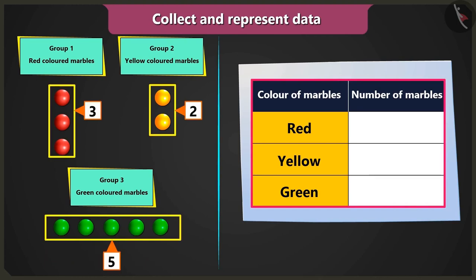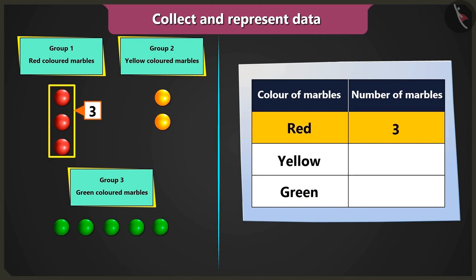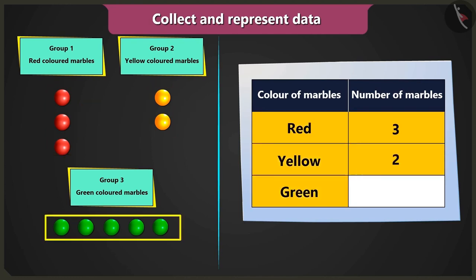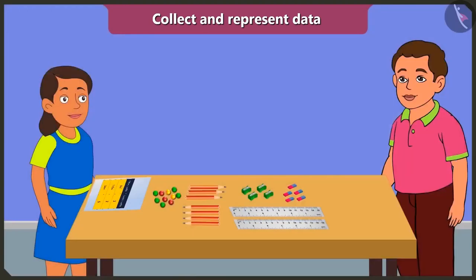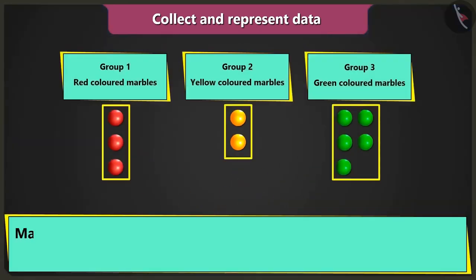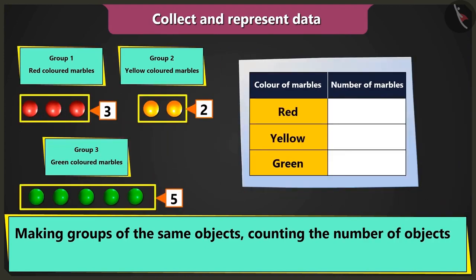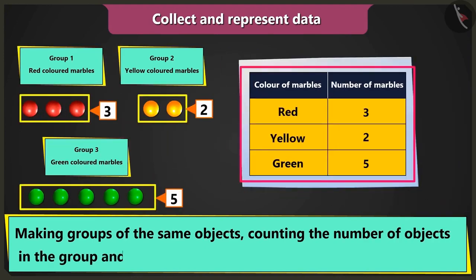Now we have to write these numbers in the table. In the column count of marbles, we will write three beside red color, two beside yellow color, and five beside green color. Well done Bubbly, you represented the data very well. What is data? Making groups of similar objects, counting the number of objects in the group, and filling that information in a table is called data.